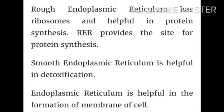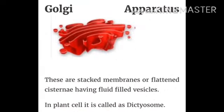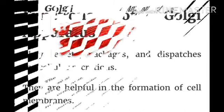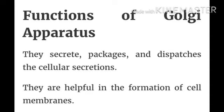Now, Golgi apparatus. These are stacked membranes or a flattened system having fluid-filled vesicles. In plant cells, it is called dictyosomes. Functions of Golgi apparatus: they secrete, package, and dispatch cellular secretions; they are helpful in the formation of the cell membrane.